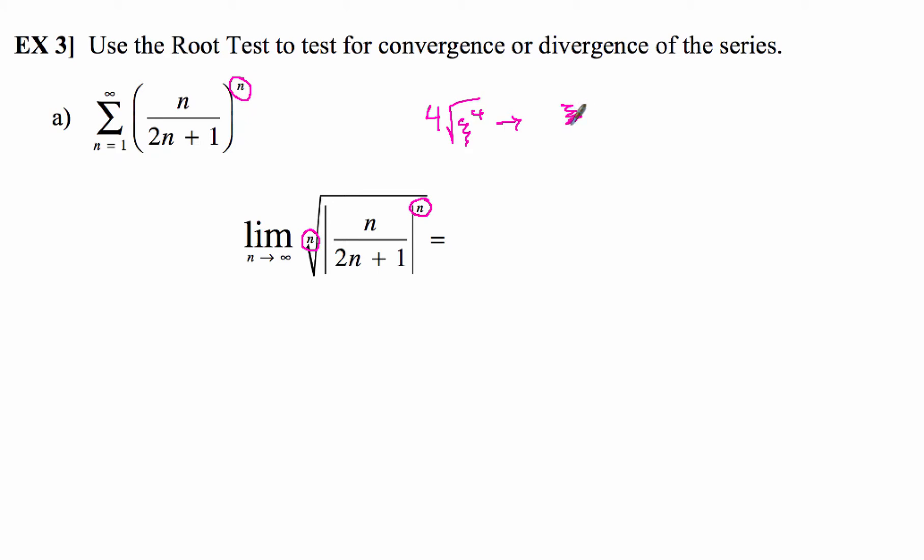when you write that exponentially, you'll have the fourth power and then the 1 over 4, so those just cancel out. Which means these two things, boom, boom, they're going to cancel out, right? So when they cancel out, you'll just be left with what's left.